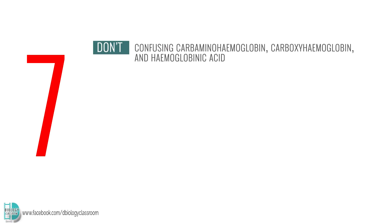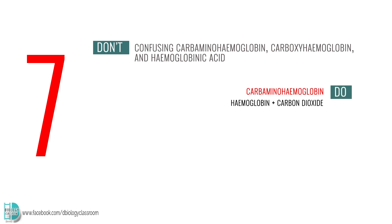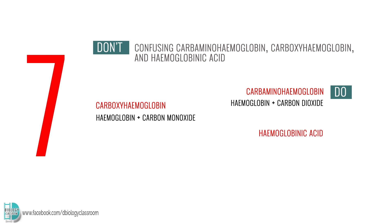Number 7: confusing carbaminohemoglobin, carboxyhemoglobin, and hemoglobinic acid. Carbaminohemoglobin is a compound formed from hemoglobin and carbon dioxide. Carboxyhemoglobin is formed by hemoglobin and carbon monoxide. Hemoglobinic acid is a weak acid formed when a hydrogen ion combines with hemoglobin.